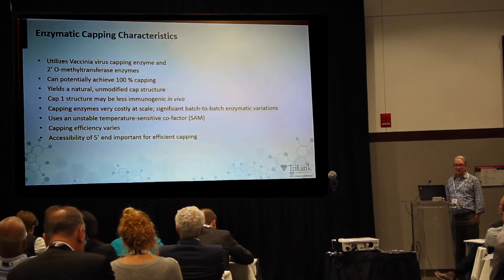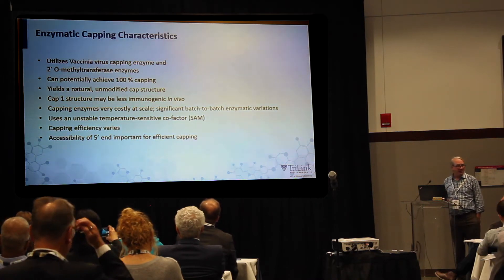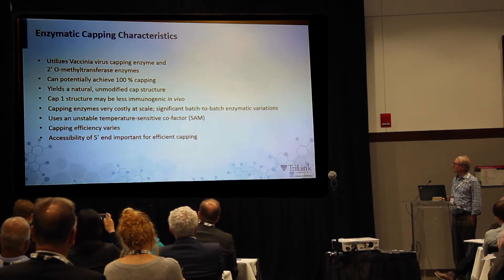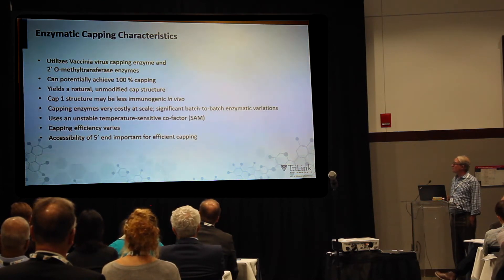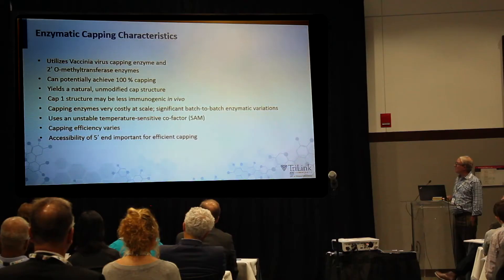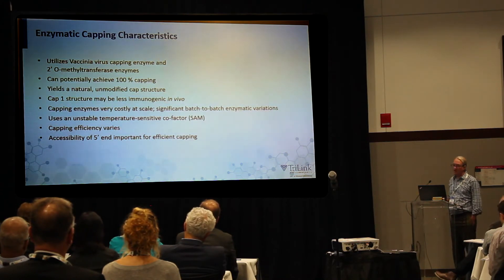Enzymatic capping utilizes a vaccinia virus capping enzyme and a 2-prime O-methyltransferase. You can get 100% capping if you drive this reaction to completion in most cases. The yields a natural unmodified cap structure, which may be good. The cap one structure is less immunogenic in vivo, and so this gets you to a desirable capping state. But capping enzymes are costly at scale and there's significant batch-to-batch enzymatic variation. They also use an unstable cofactor, which is S-adenosylmethionine. The capping efficiency can vary, especially if you have a structured 5-prime end.